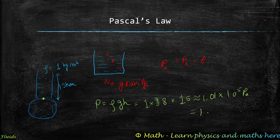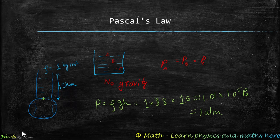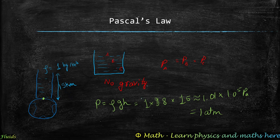Unlike water, which is incompressible, air can be compressed. Due to gravity, air near the ground is compressed, so its density is slightly more and the effective height is slightly less. This is why the rough estimate still gives us a reasonable value of atmospheric pressure.